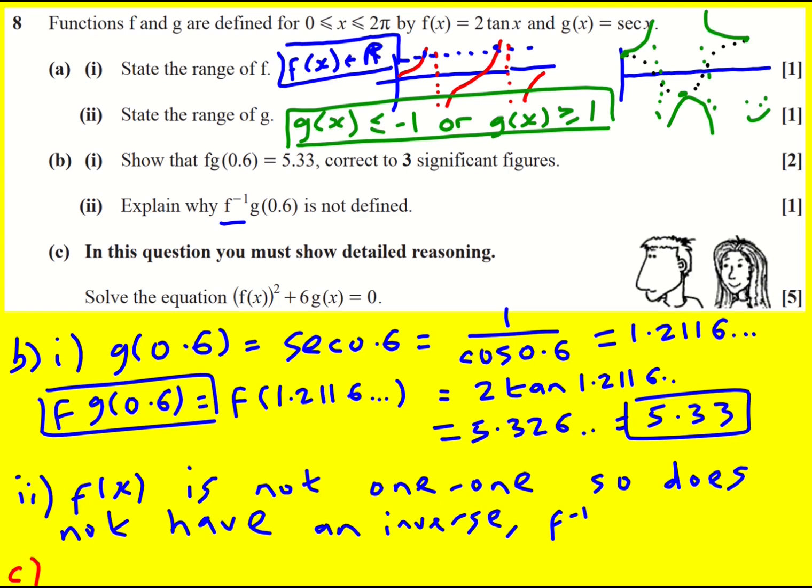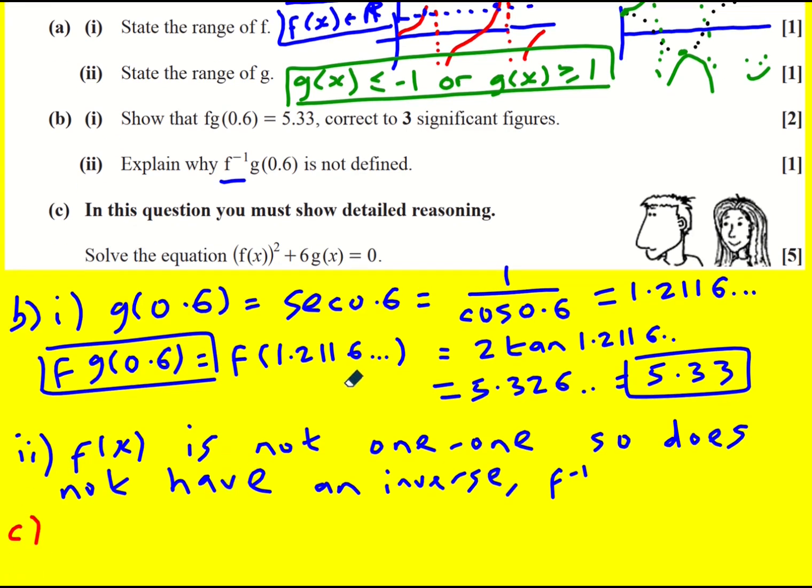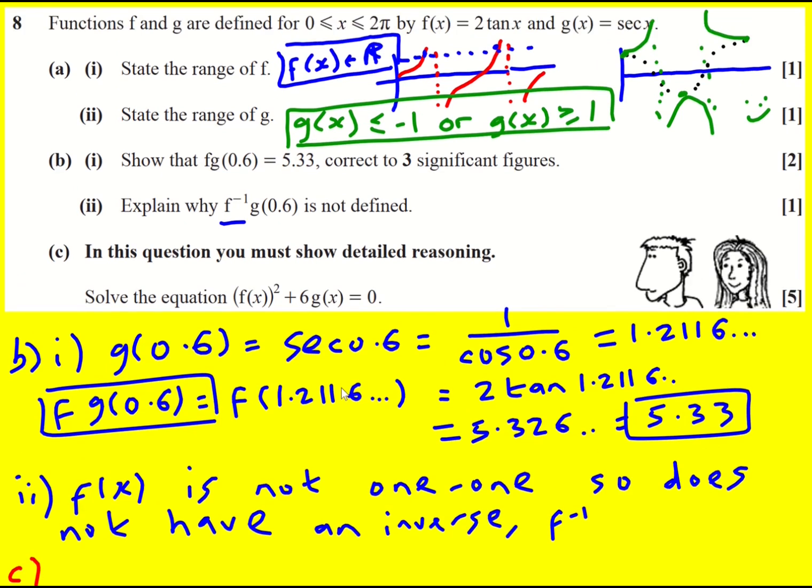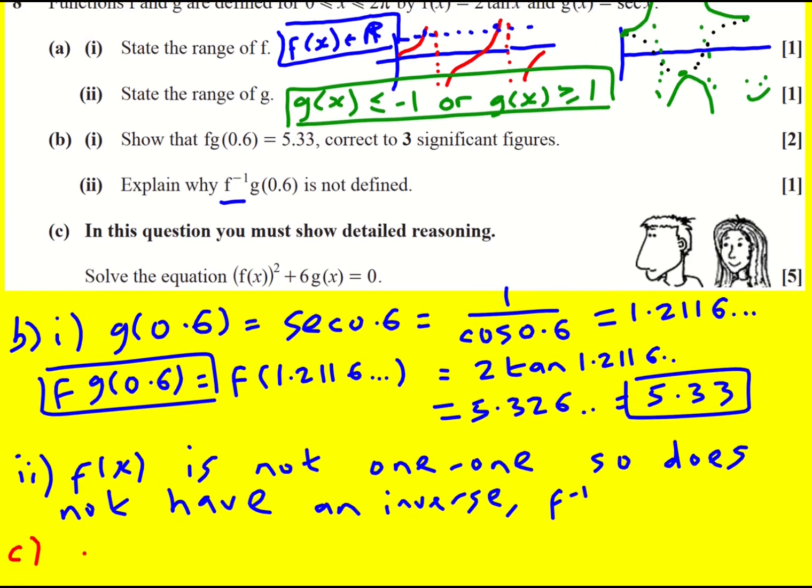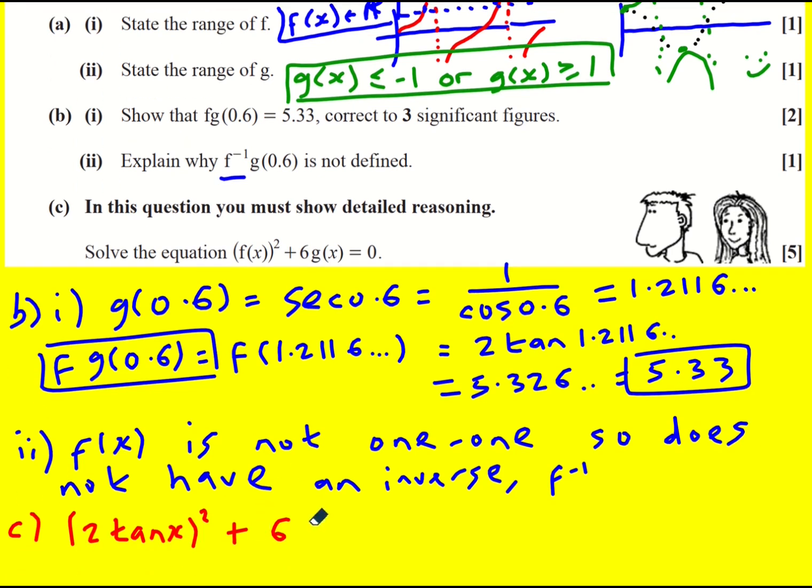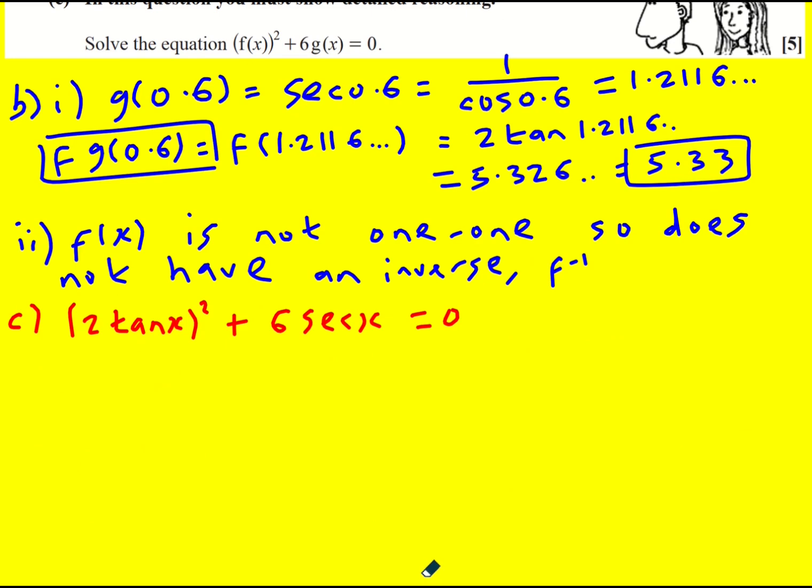Finally, we're asked to solve this equation f(x)² + 6g(x) = 0. So remember f(x) is 2tan(x). And then g(x) is sec(x). So at the moment I've got tan and sec, we're going to need to use a trig identity. And it's going to be along the line, I always prove this from first principles, I never remember them.